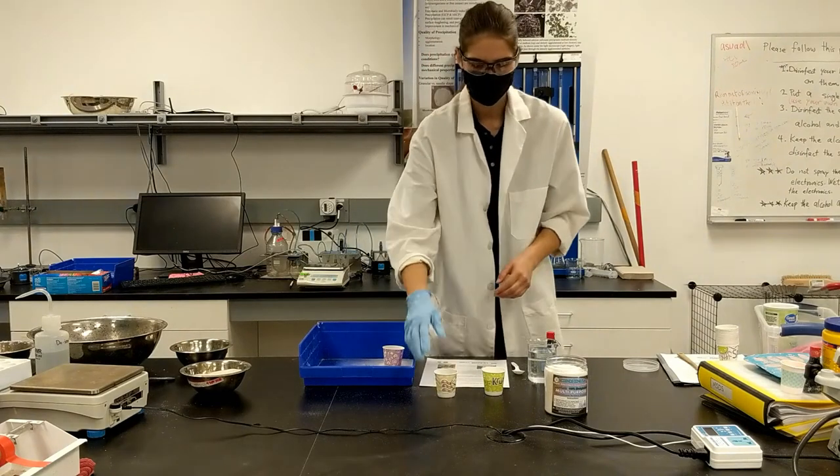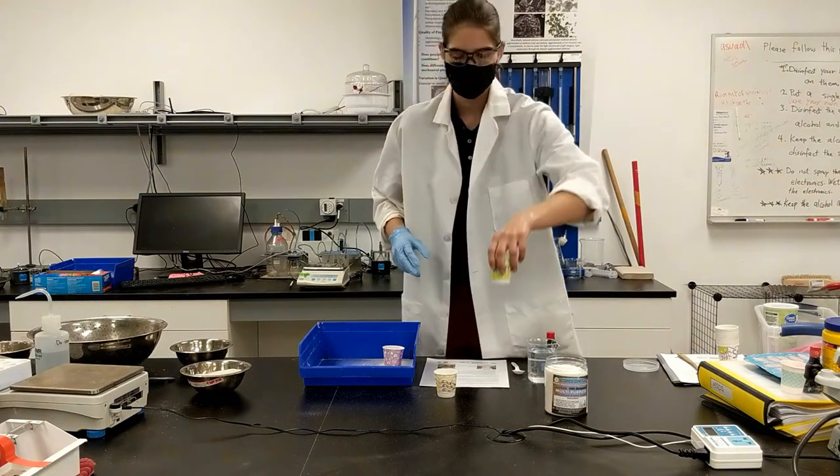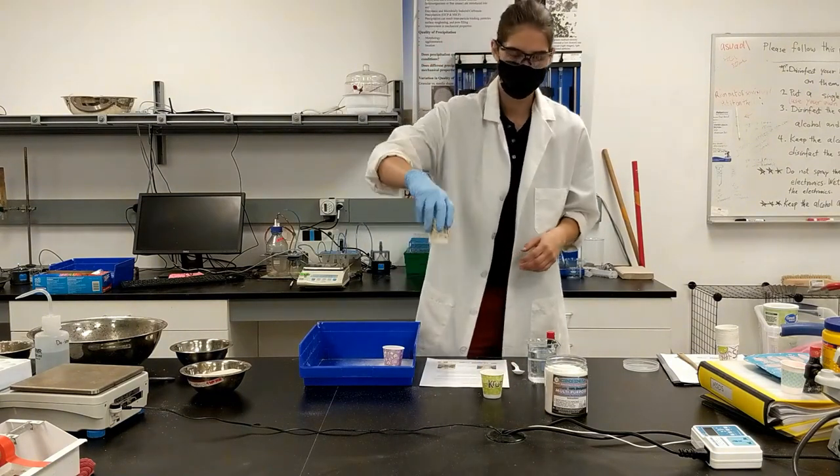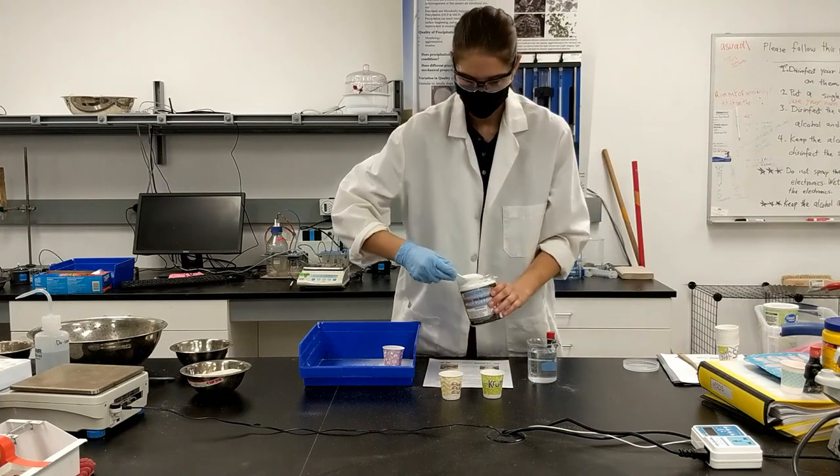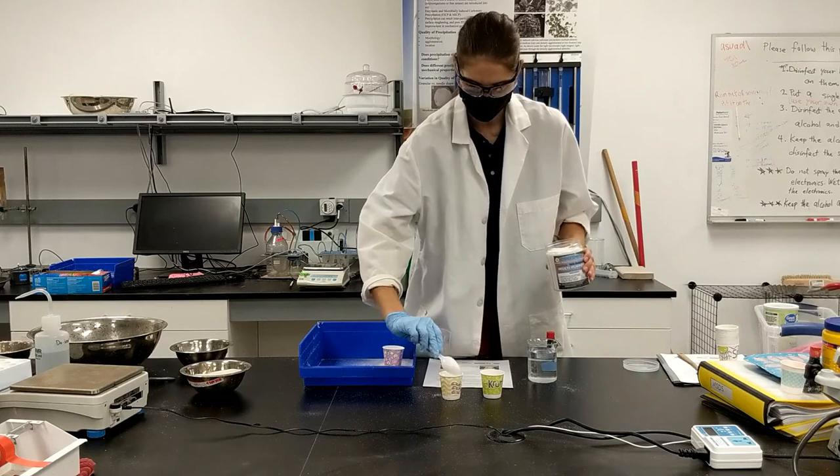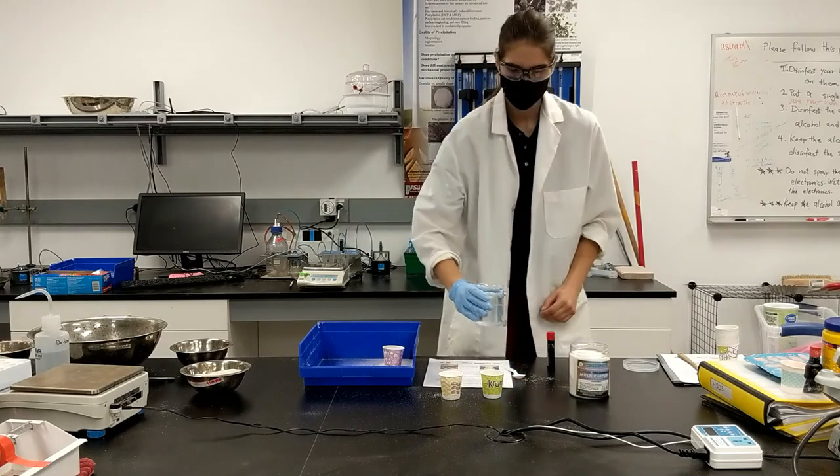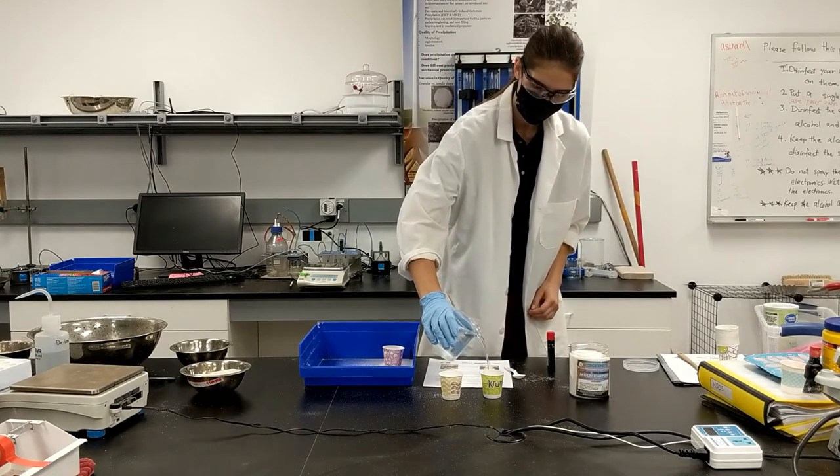We're going to have two conditions. We're going to have dry untreated sand and one which we add our hydrogel to. Just add one scoop of hydrogel on top of the surface and then we'll dump water on both of our samples.